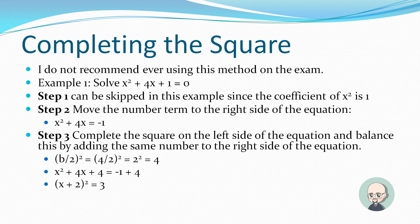The problem is x squared plus 4x plus 1 equals zero. The a value is 1, so we skip step one. Step two: move the constant term to the right side of the equation. We move the 1 to the right and it becomes negative 1, giving us x squared plus 4x equals negative 1.